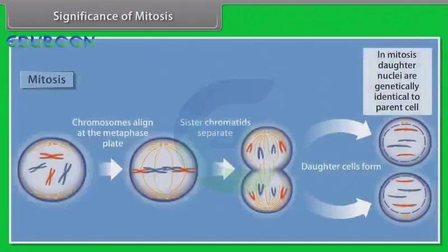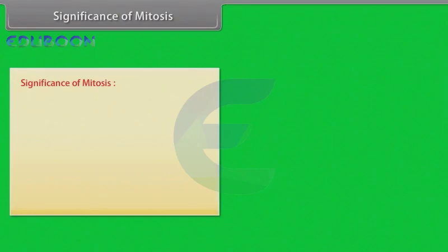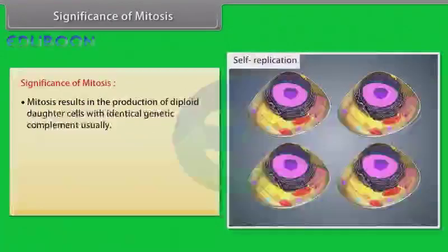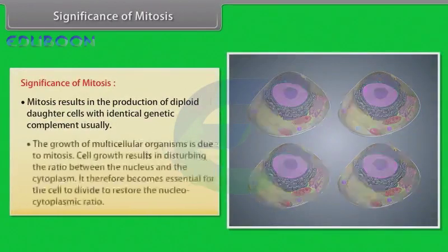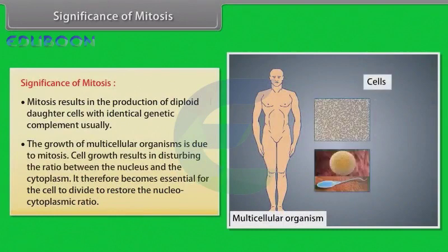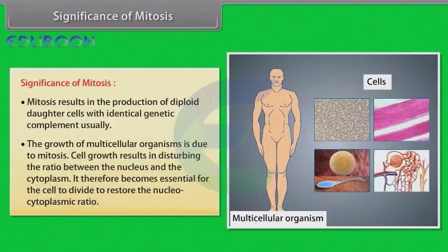Significance of mitosis. Mitosis results in the production of diploid daughter cells with identical genetic complement. Usually, the growth of multicellular organisms is due to mitosis. Cell growth results in disturbing the ratio between the nucleus and the cytoplasm. It therefore becomes essential for the cell to divide to restore the nucleocytoplasmic ratio.